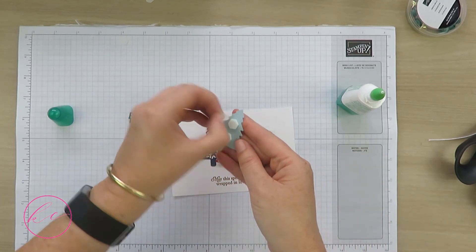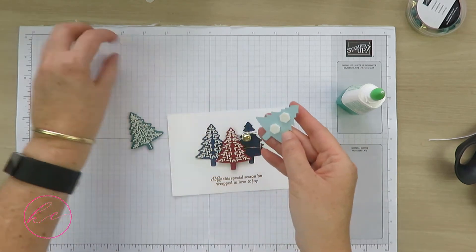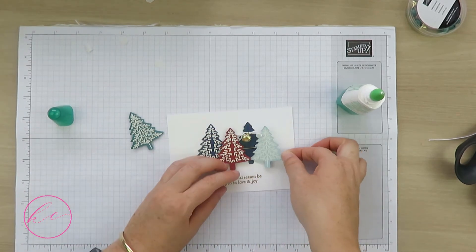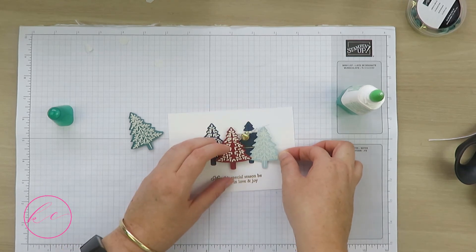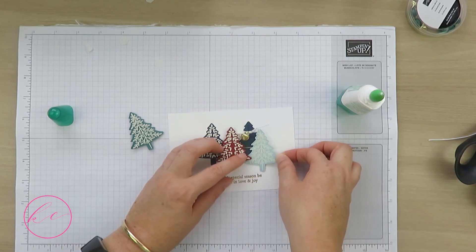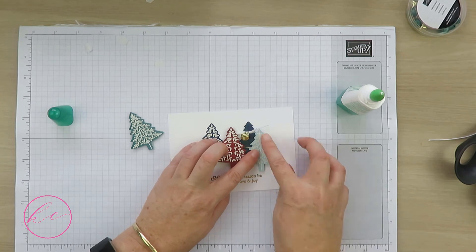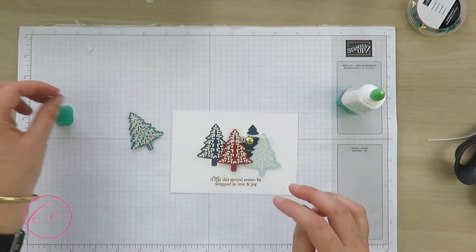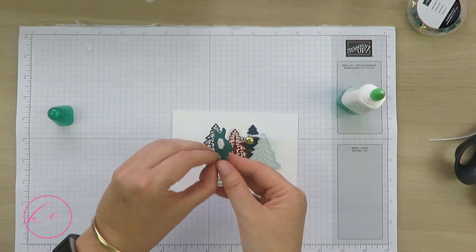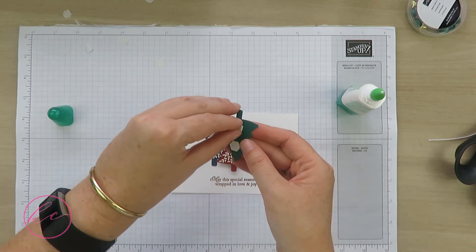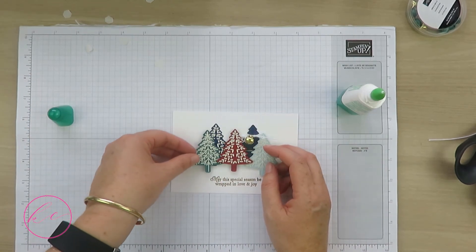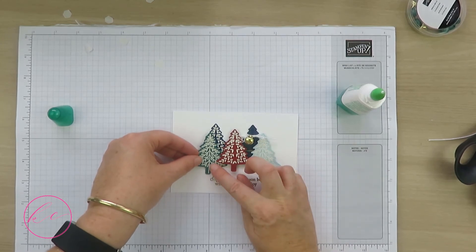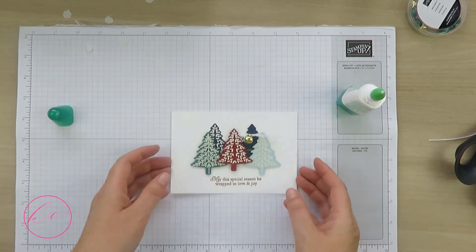We'll put our blue one just under, a little bit lower. Then we have our green one on the other side, like so.